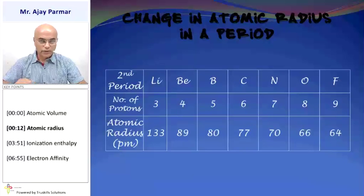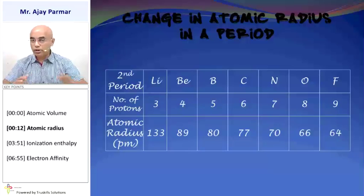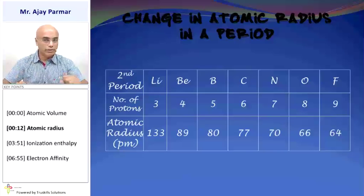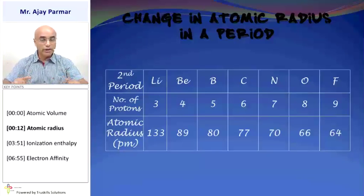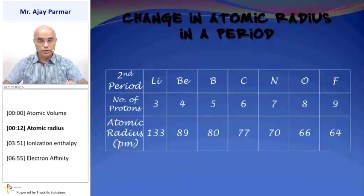For example, lithium has got three protons in the nucleus, so these three protons will be engaged in attracting electrons towards the nucleus. Whereas in beryllium, boron, and so on, the number of protons are more, and because of that reason, with greater force they are going to attract the electrons. So the outermost orbit is going to be slightly nearer to the nucleus as compared to that in lithium. You can see that the atomic radius decreases as we move from left to right in a given period — for lithium it is 133, whereas for fluorine it has decreased to 64.